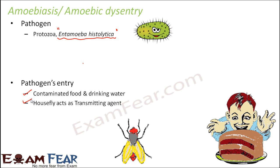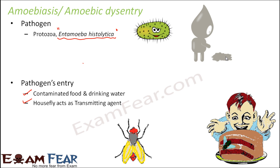The parasites — the protozoa — are present in the faeces of the infected person. The housefly will carry the parasites from the faeces and transfer them to the food of a normal person. So the housefly sits on the faeces, picks up the parasite, and when it sits on someone else's food it transmits the parasite, contaminating the food. When this person eats the food, they get infected with Entamoeba histolytica.